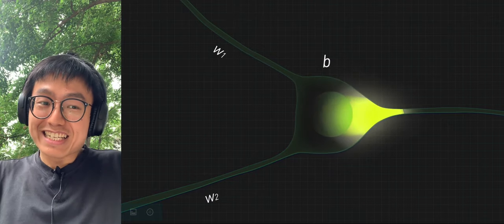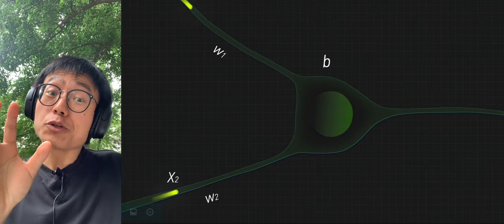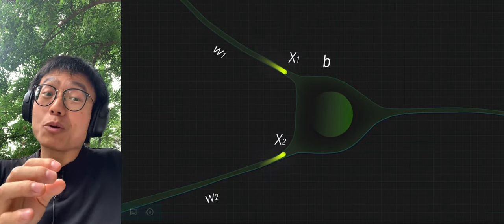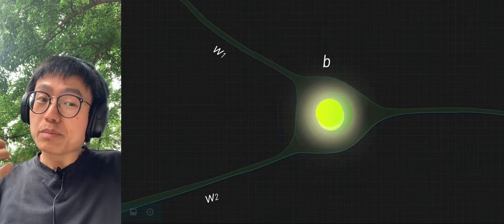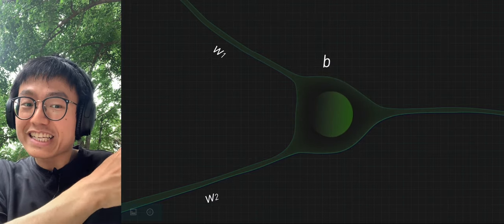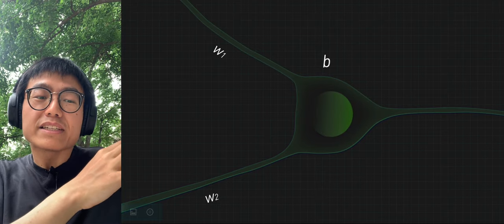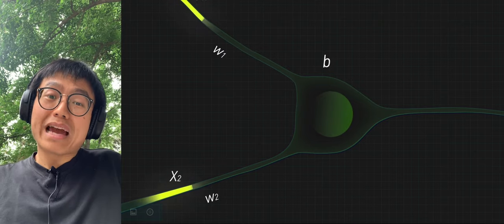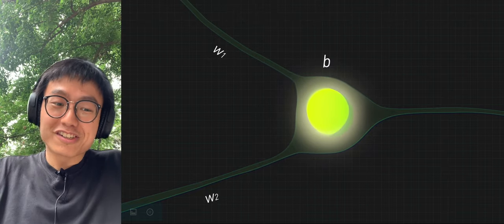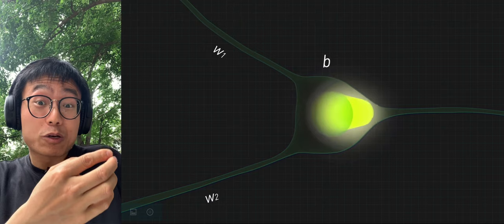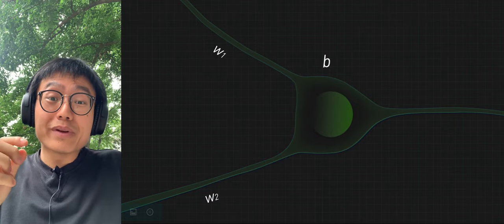Suppose that by default, the input signals X1 and X2 are both 10, the weights W1 and W2 are both 1, and B is 100. At this moment, it does not reach the threshold B. The neuron is not activated. If the input dendritic signals X1 and X2 become larger, or the dendritic weights W1 and W2 become larger, then the input signal can be greater than the threshold B value 100, allowing neurons to be activated.